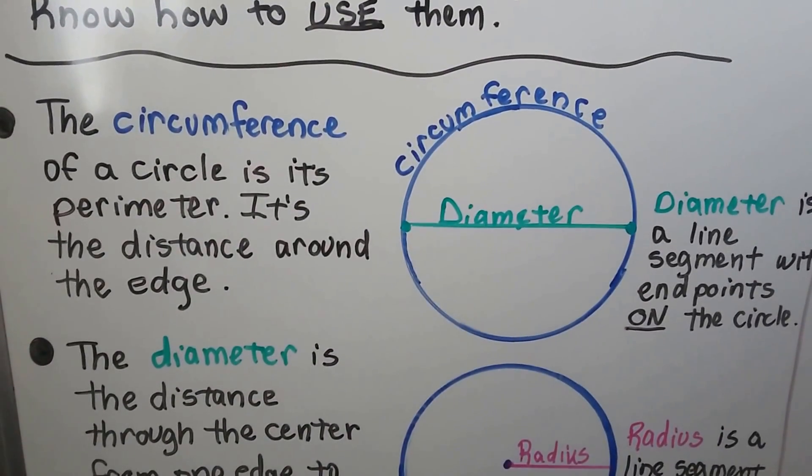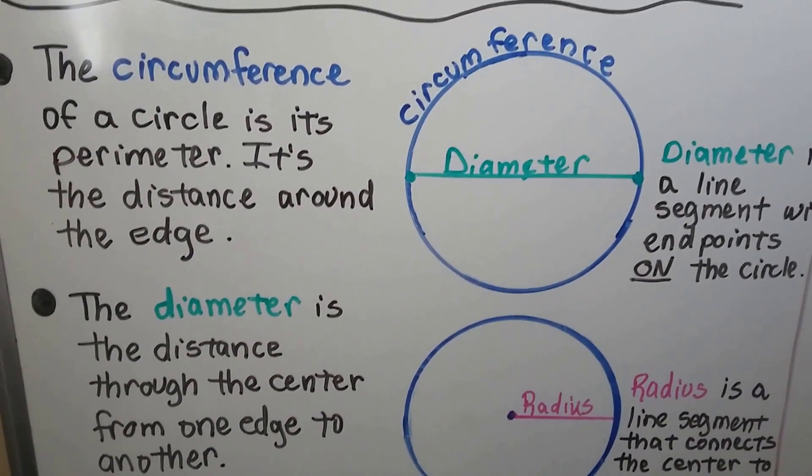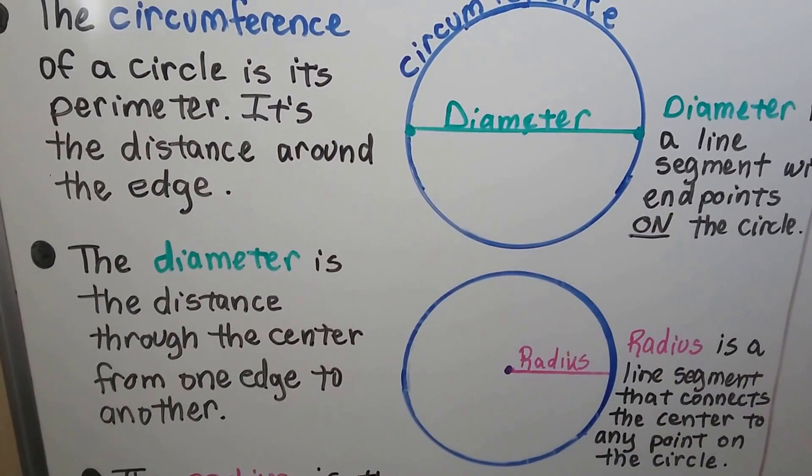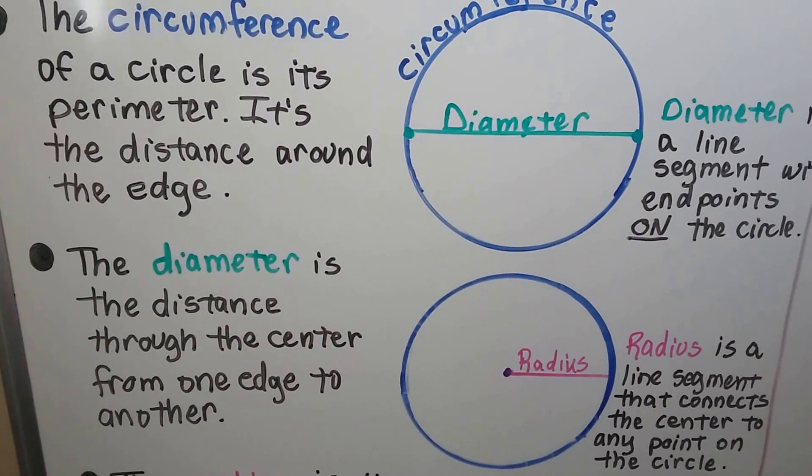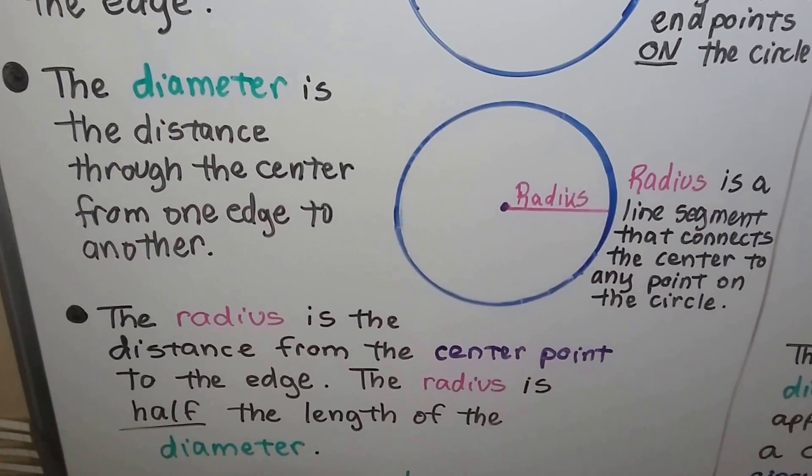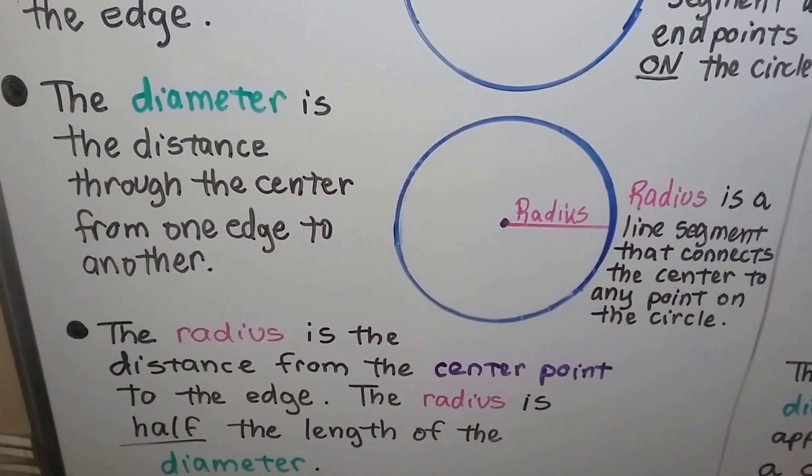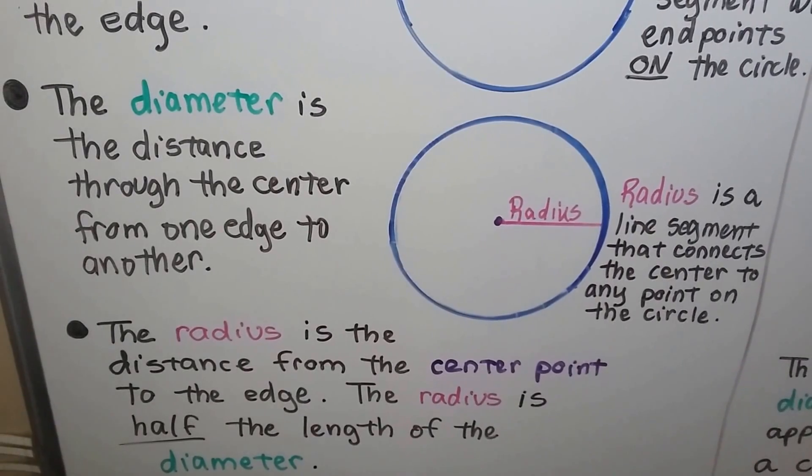Circumference of a circle is its perimeter. It's the distance around the edge. It's that blue circle. Diameter is the distance through the center from one edge to another. It's a line segment with endpoints on the circle, and radius is the distance from the center point to the edge, and the radius is half the length of the diameter.